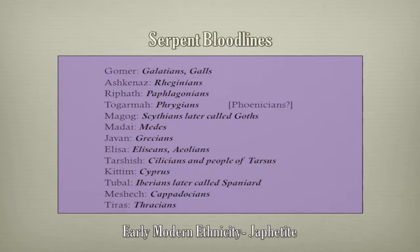In early modern ethnicity, Josephus equated Gomer to the Galatians or Gauls, Ashkenaz to the Virginians, Repath to the Papagonians, Garma to the Phrygians, Magog to the Scythians later called Goths, Medi to the Medes, Javon to the Grecians, Elissa to the Elysians or Aeolians, Tarshish to the Cilicians and people of Tarsus, Kittim to the people of Cyprus, Tubal to the Iberians later called Spaniards, and Meshach to the Cappadocians, and Tiras to the Thracians.